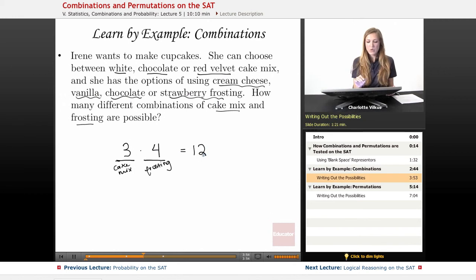And if I was a little bit confused about doing it this way, and this problem is not too hard, but I'll still show you how you would write it out. Basically, you would look at, so if I had white cake, I'll just represent that with a W. I could have either vanilla, cream cheese, chocolate, or strawberry frosting. And you're going to want to use some sort of shorthand when you're writing these out, because obviously you don't have time on the SAT to be writing out a bunch of words. But, so these are my options with white cake.